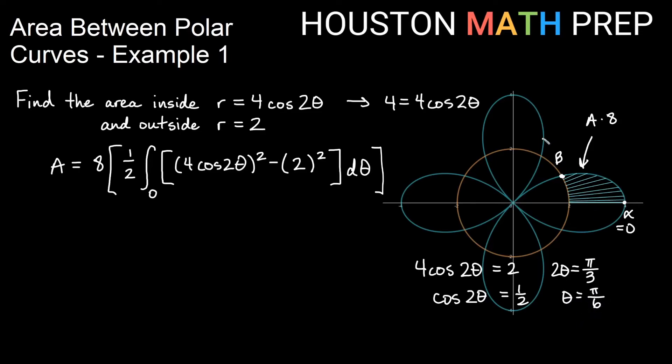So our beta is pi over 6 here. And we will be integrating from 0 to pi over 6. Let's go ahead and begin to work on this. First of all 8 times a half we're going to get a 4 there. Integral from 0 to pi over 6. Now if I square 4 cosine 2 theta I will get 16 cosine squared 2 theta. If I square 2 I just get 4 there. Integral of that d theta.